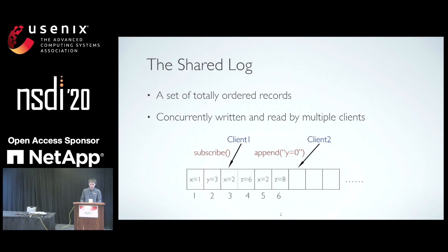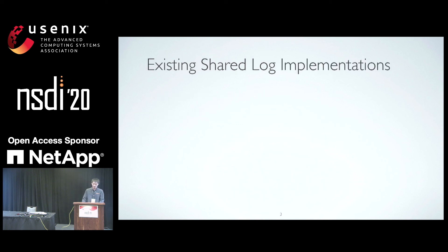The API of a shared log includes two main methods: Append, through which a client can write records to the log, and Subscribe, through which a client can read the log. Shared logs are an important building block in distributed systems. For example, they are used for debugging, and applications like databases use a shared log to create a total order of transactions, which simplifies concurrency control.